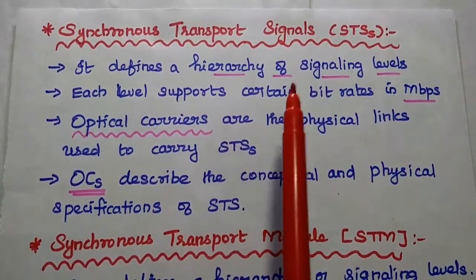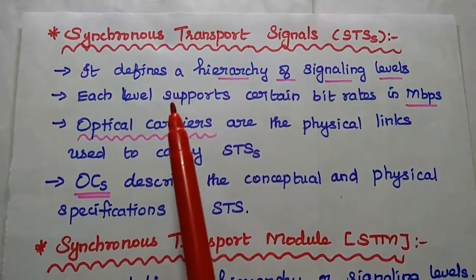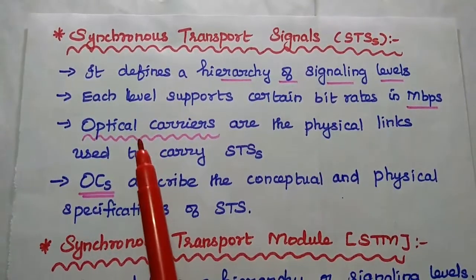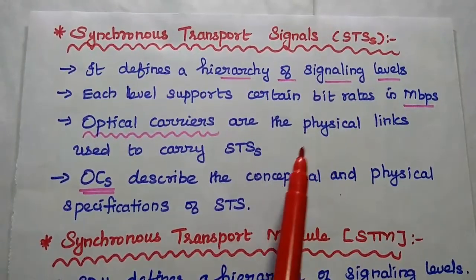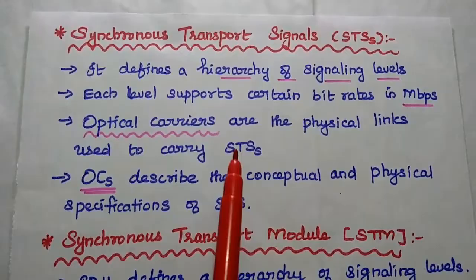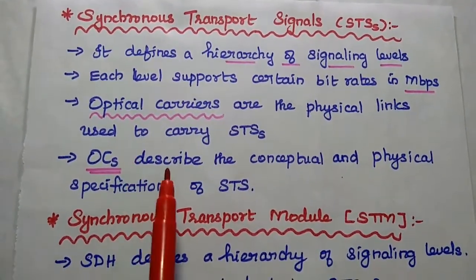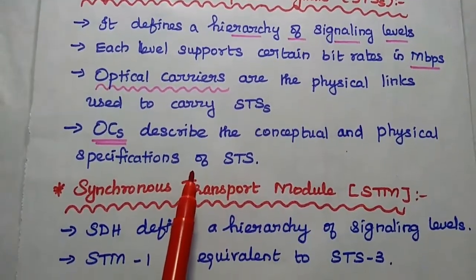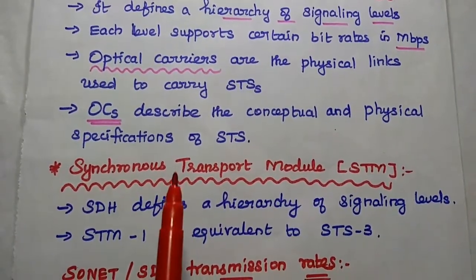In SONET, STS defines a hierarchy of signaling levels, where each level supports certain bit rates in megabits per second. The physical layers used to carry STS are called Optical Carriers. These Optical Carriers describe the conceptual and physical specifications of STS. In SONET, STS is used.